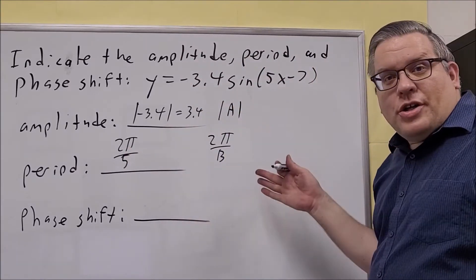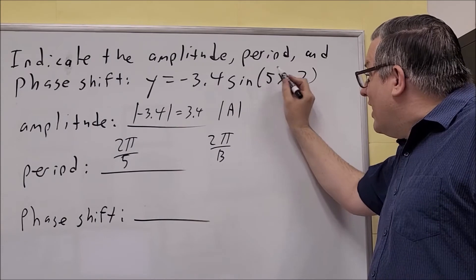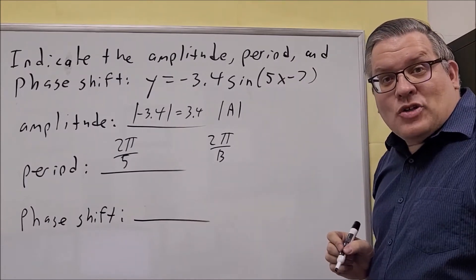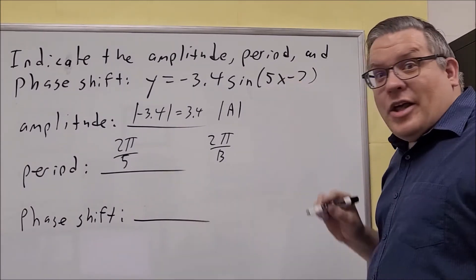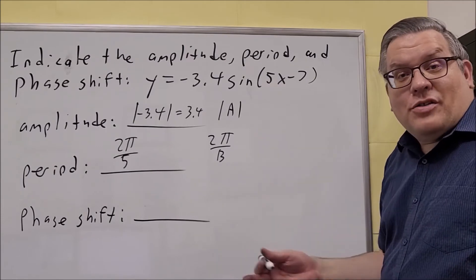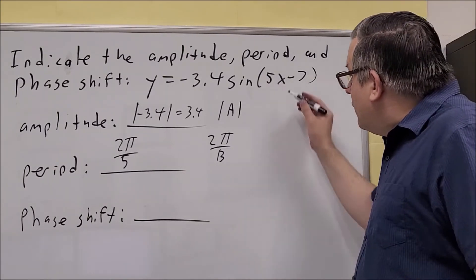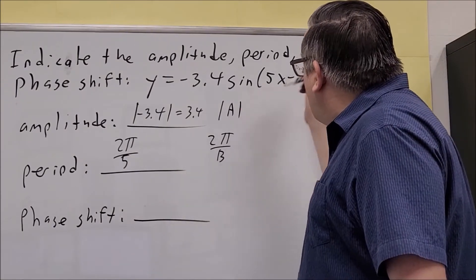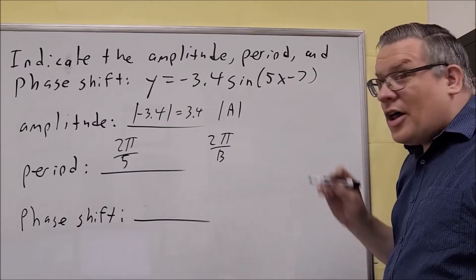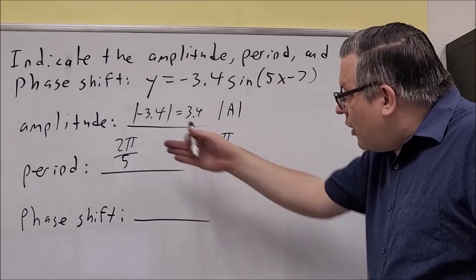Now I should mention here that these formulas only work when the B value is positive. If the B value is negative, we are going to do a problem like that a little bit later in the session that will address that. But in this case here, it works because everything is, the B value is positive. 2π over 5.